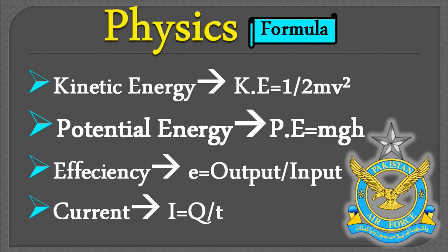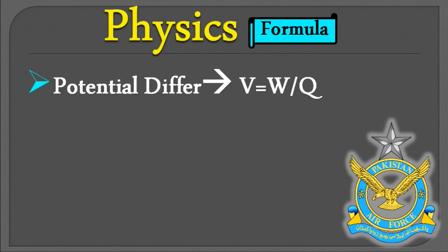Electric current کا formula ہے I = Q/t، یعنی کسی conductor میں ایک وقت میں جتنے charges گزرتے ہیں وہ electric current ہے۔ Current کی قسمیں ہیں: alternating current (AC) اور direct current (DC)، اور conventional current بھی ہے۔ ان کا فرق آپ نے اپنی books میں پڑھ لینا چاہیے۔